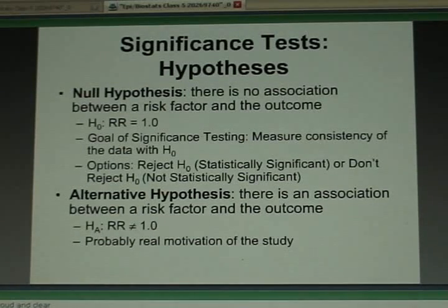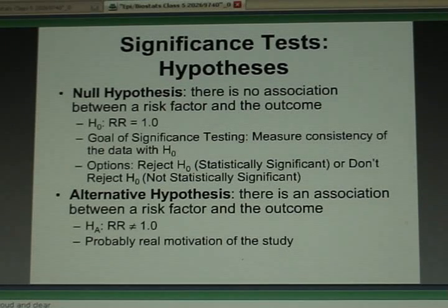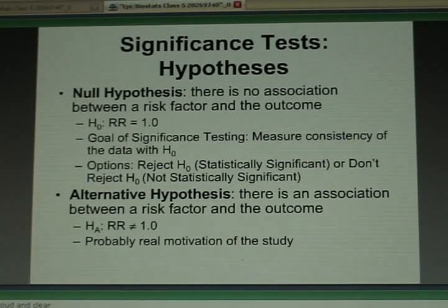The goal of significance testing is just to ask how consistent are your data with that null hypothesis. And it's very simple. You're going to have two options. Based on your test of significance, you can say I reject the null hypothesis, which means you have a statistically significant result, or you don't reject.